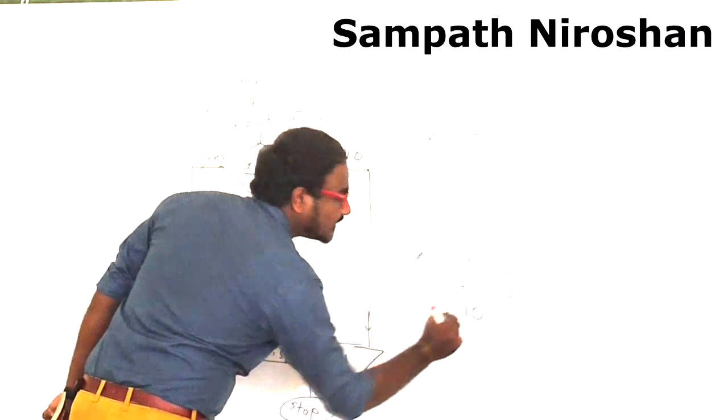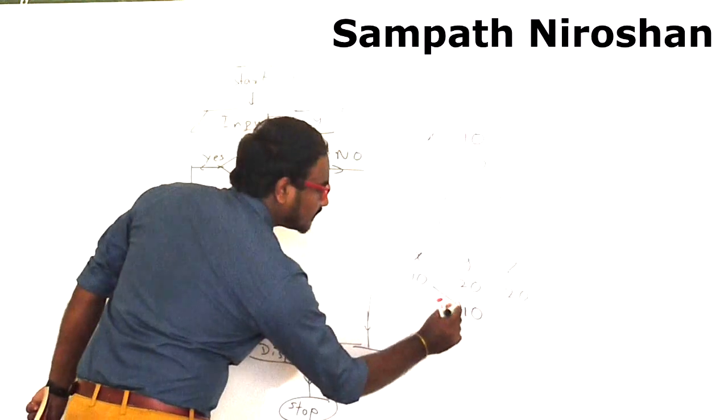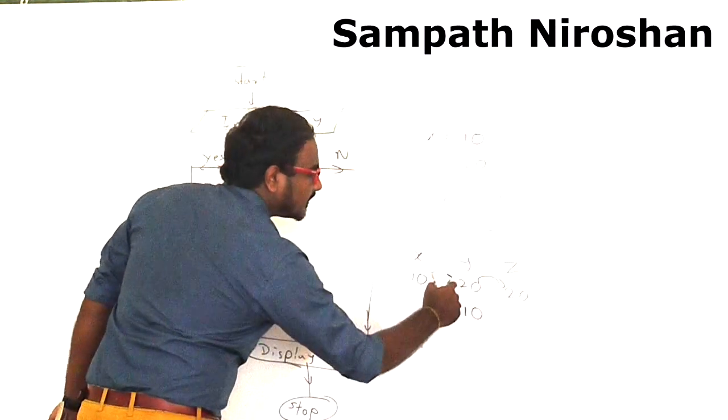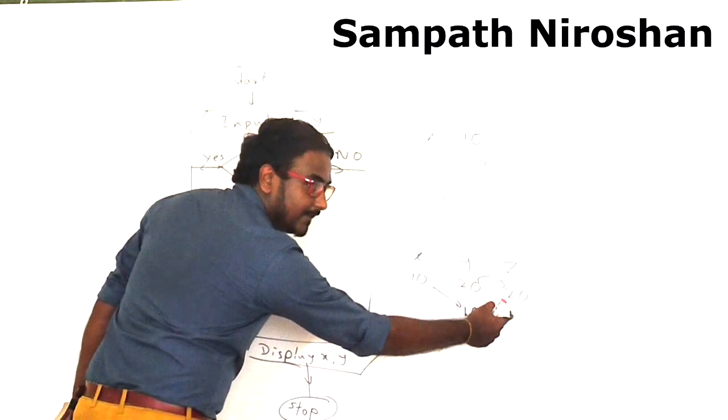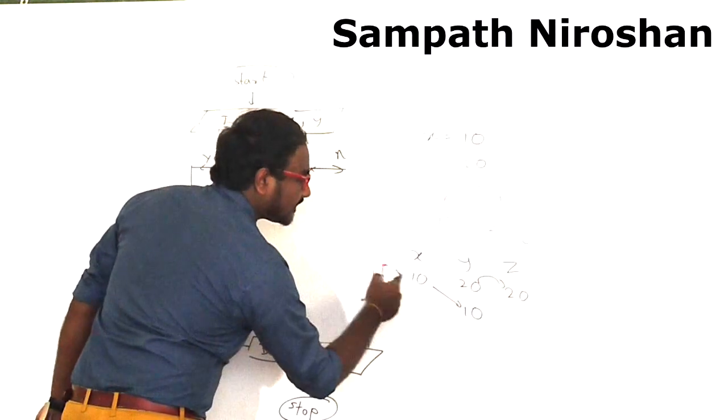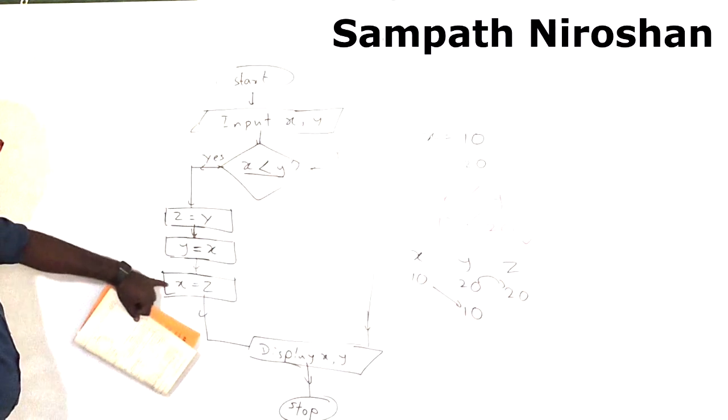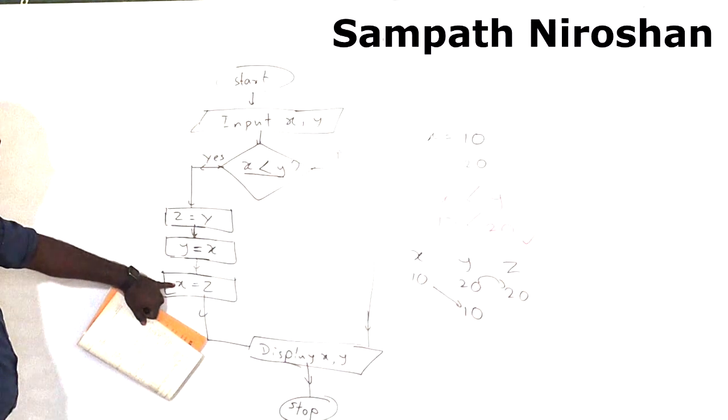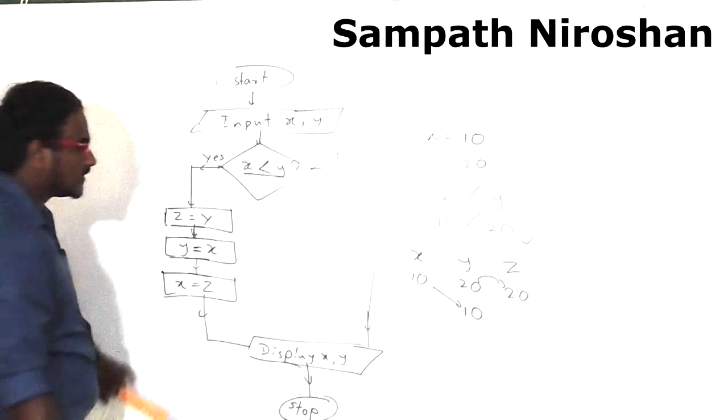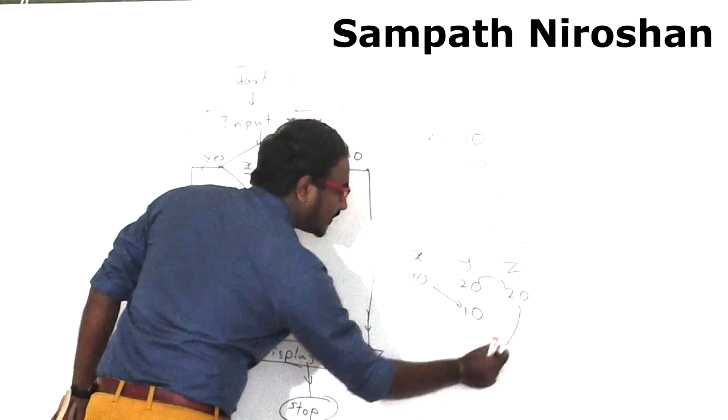Z gets the value of y, then y gets the value of x. In the third step, x gets the value of z. So x is getting the value of z, which is 20.